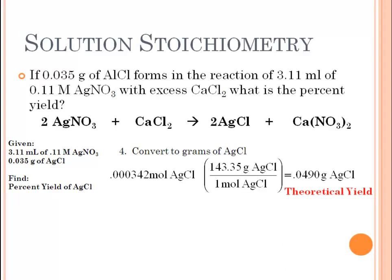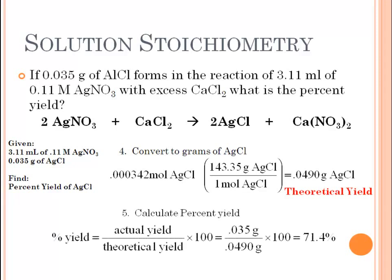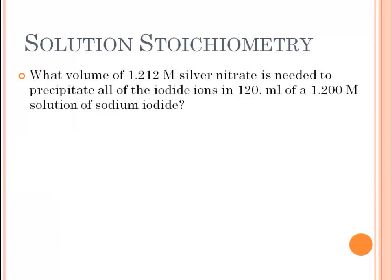If we were able to complete this reaction 100% with no error, 0.0490 grams is the amount of silver chloride we should produce. But that's not what was produced — we were told in the original problem that only 0.035 grams of silver chloride was produced. To calculate percent yield, take the actual yield, divide it by the theoretical yield, and multiply by 100. Plugging in our numbers, we get a 71.4% yield.